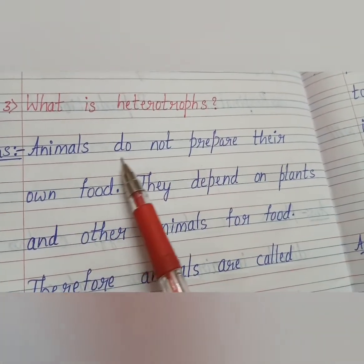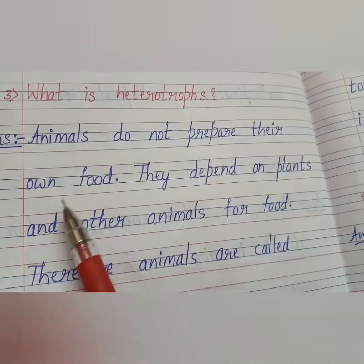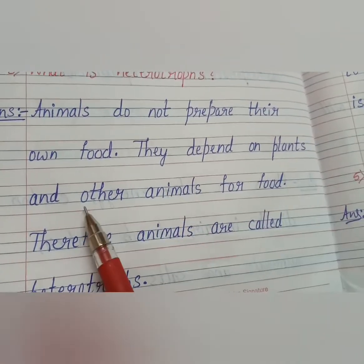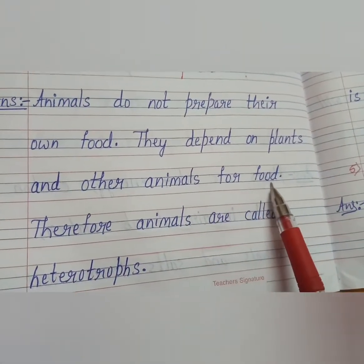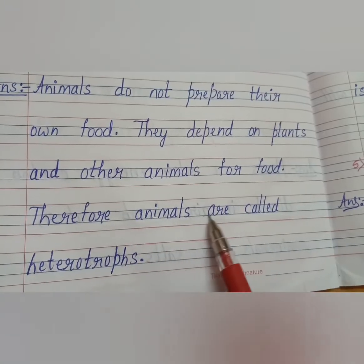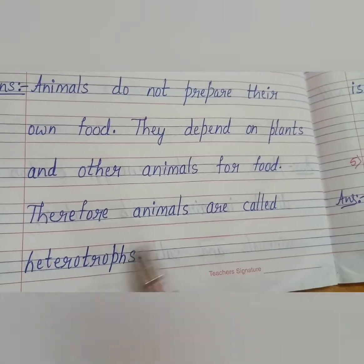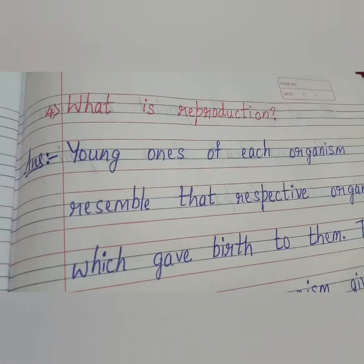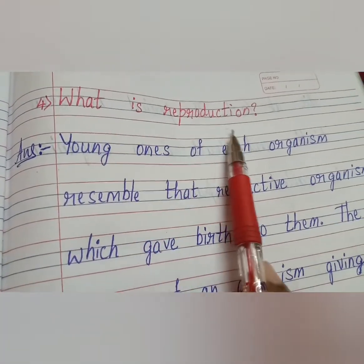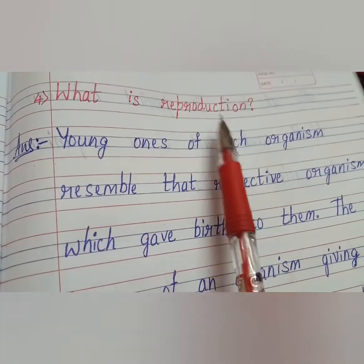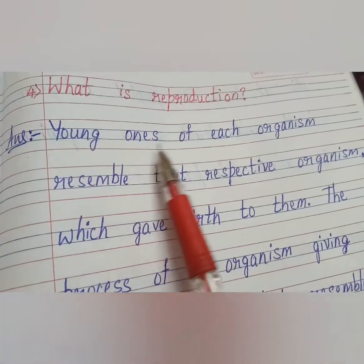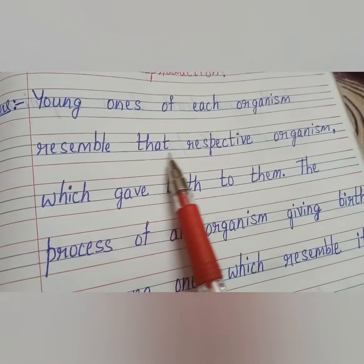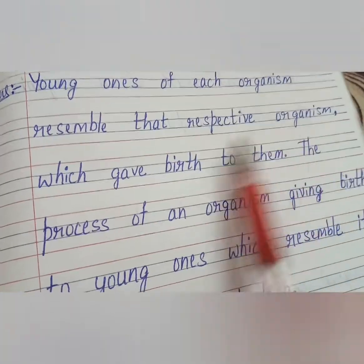Third question: what are heterotropes? Animals do not prepare their own food. They depend on plants and other animals for food. Therefore, animals are called heterotropes.